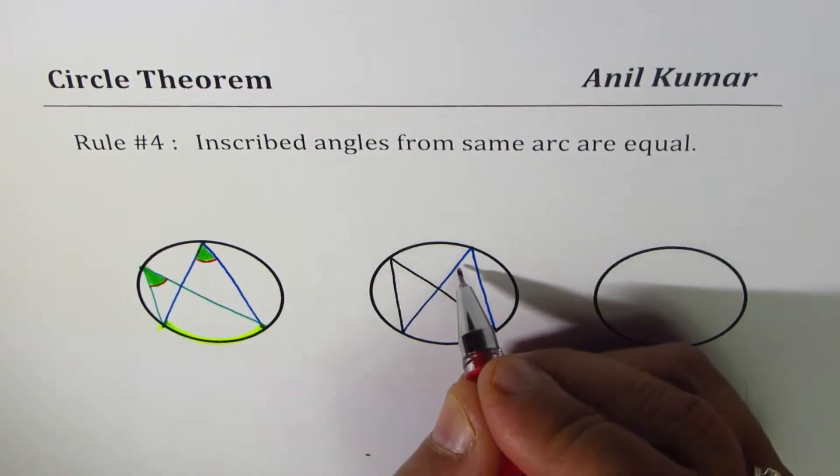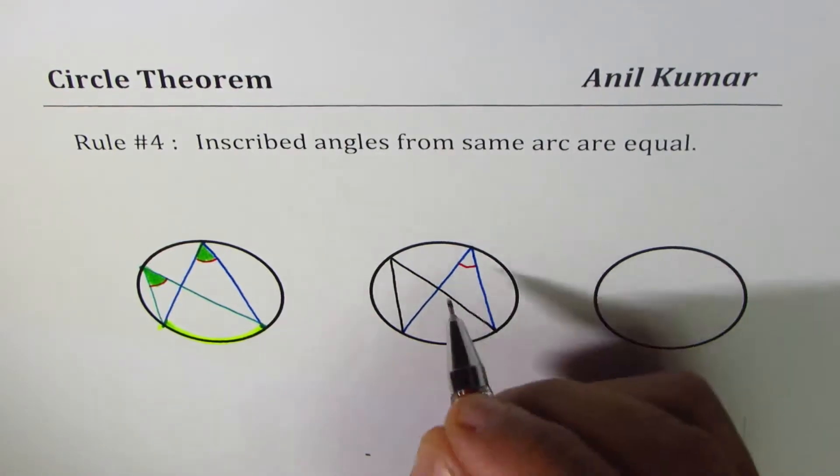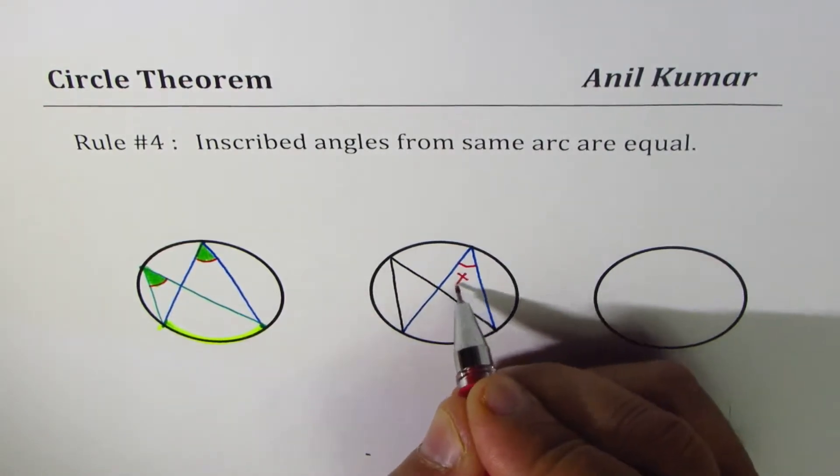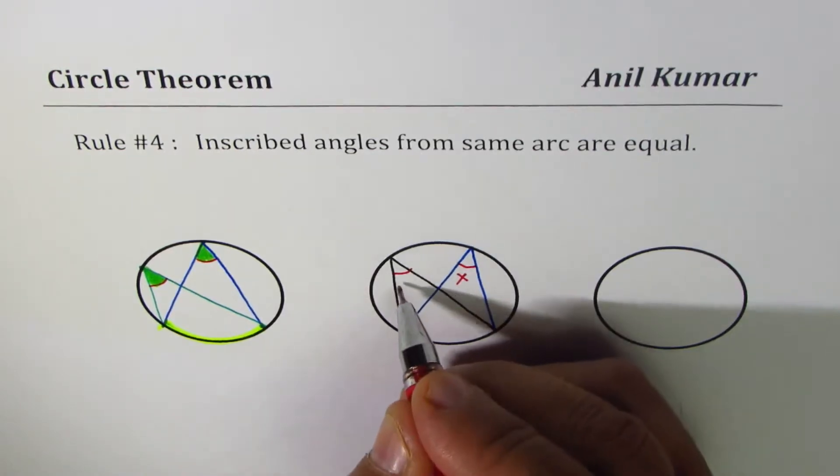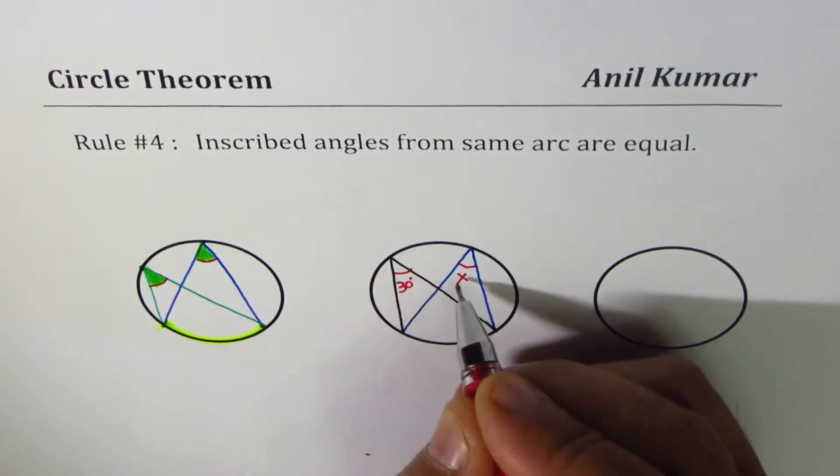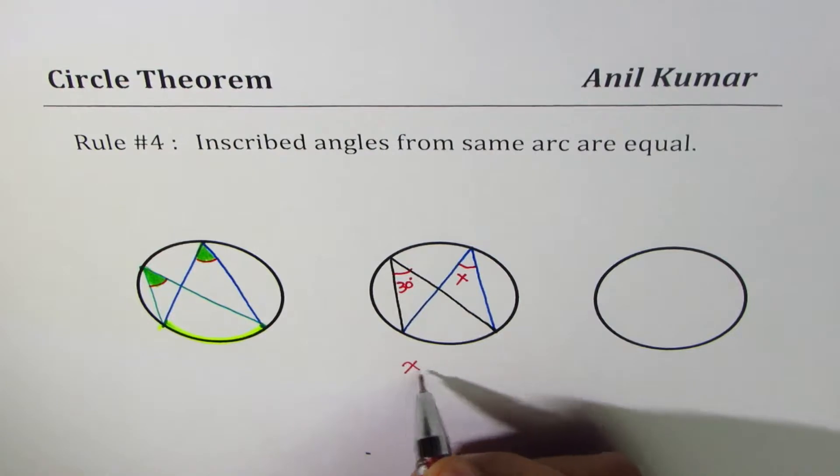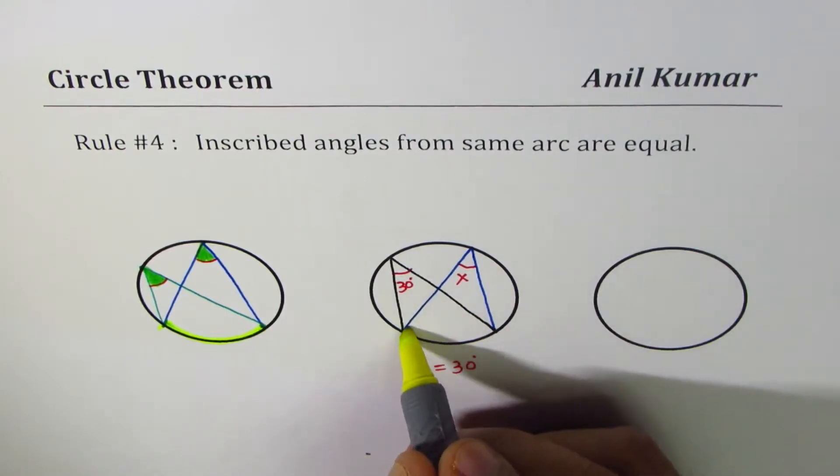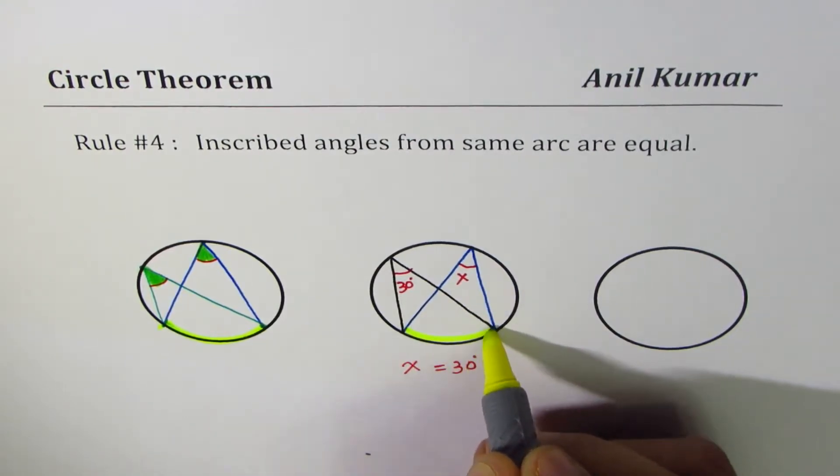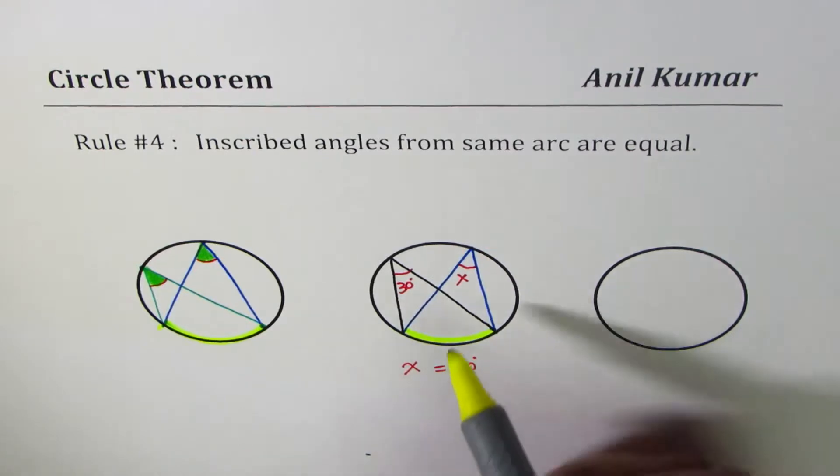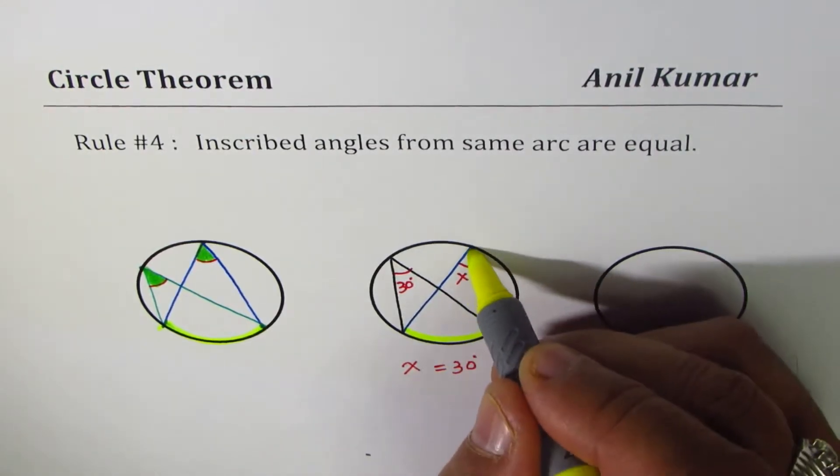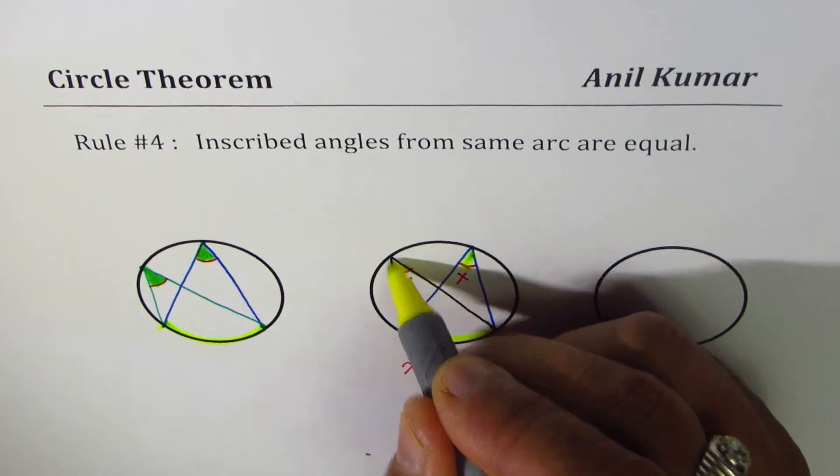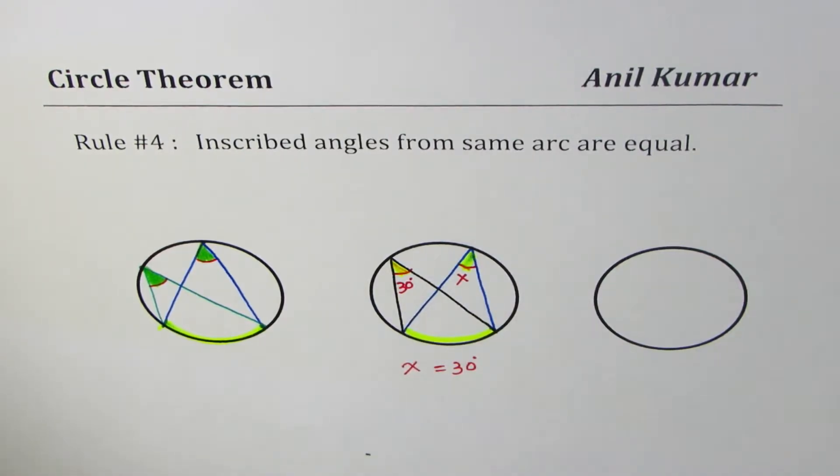Okay, if this angle is x and this angle is let's say 30 degrees, what is x? Then x should be equal to 30 degrees since both have common arc. Do you see that? Both have common arc, so that's what it means. Both angles are equal.